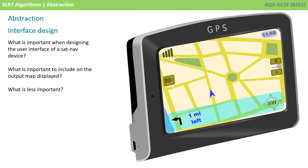To understand abstraction, let's consider the creation of the software for a satellite navigation device. When designing the user interface, we have to think about what's important to include in terms of the inputs and in terms of the output map. We need to think about what to include on that map, and what's not important and therefore not worth including.